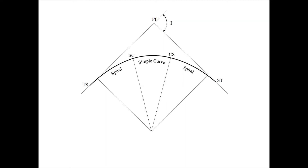The point of intersection remains as the intersection between the back and forward tangents. However, four points of interest are present along the curve due to the presence of the spiral transitions. The TS is the tangent to spiral point, where the tangent ends and the first spiral transition begins. The SC point is the spiral to curve point, where the spiral transition ends and the simple curve begins. The CS point is the curve to spiral point, where the simple curve ends and the second spiral transition begins. And finally, the ST point is the spiral to tangent point, where the second spiral ends and the tangent begins.